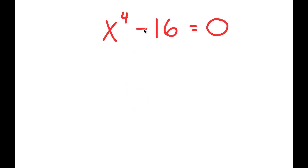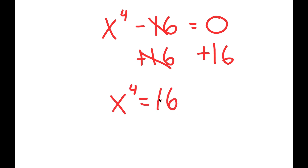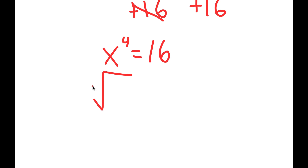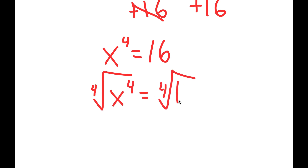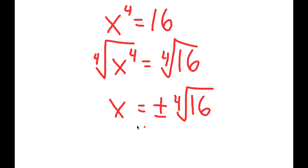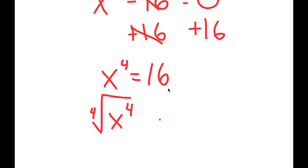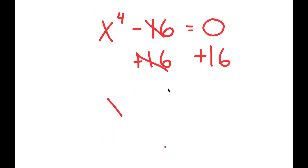I know what everyone's thinking to do. You're probably thinking to add 16 on both sides so we get x to the power of 4 is equal to 16, and now if I take the fourth root on both sides, I get x is equal to positive or negative fourth root of 16. Although this is one of the right answers, we can't actually find all the correct solutions to this equation by using that method.